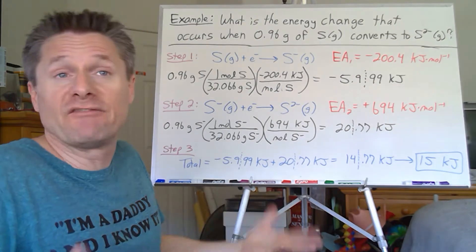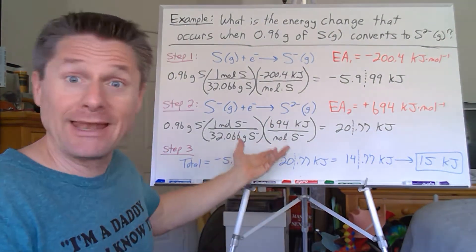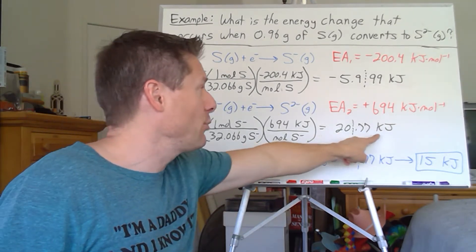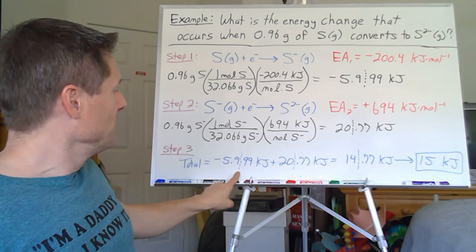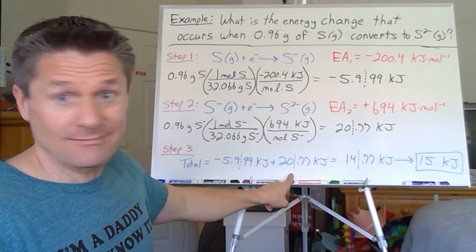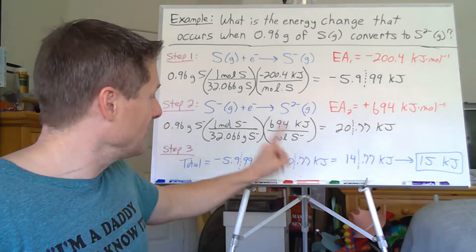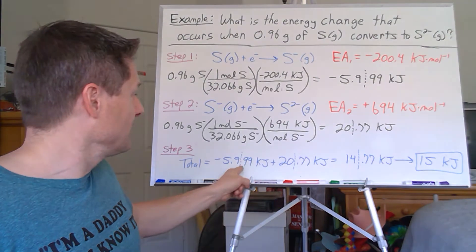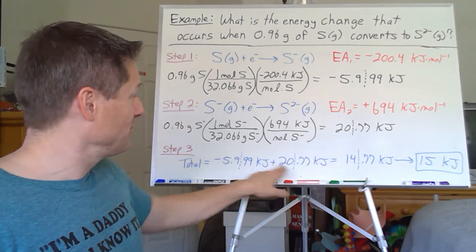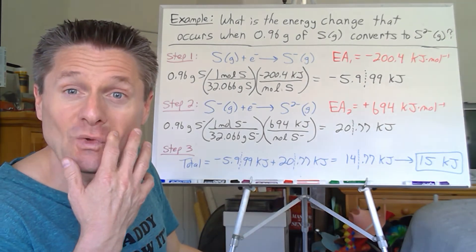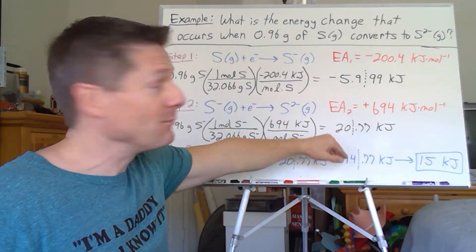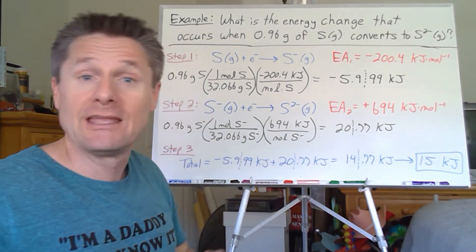Now we just add those together. Take the negative 5.999 kilojoules — good to two sig figs, accurate to the tenths place — and add it to the 20.77 kilojoules, good to the ones place. When you're adding, you're limited by the largest absolute uncertainty. This has an absolute uncertainty of plus or minus one kilojoule; this is plus or minus 0.1. So we're limited to the ones place. We end up with 14.77 kilojoules, which rounds to 15 kilojoules. So the second EA2s and EA3s are always positive, usually massively so.